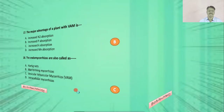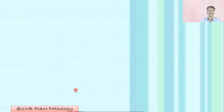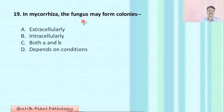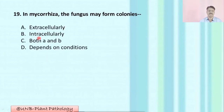Question number nineteen: In mycorrhizae, the fungus may form colonies — A: extracellularly; B: intracellularly; C: both A and B; D: depends on condition. The correct option is C: both A and B.